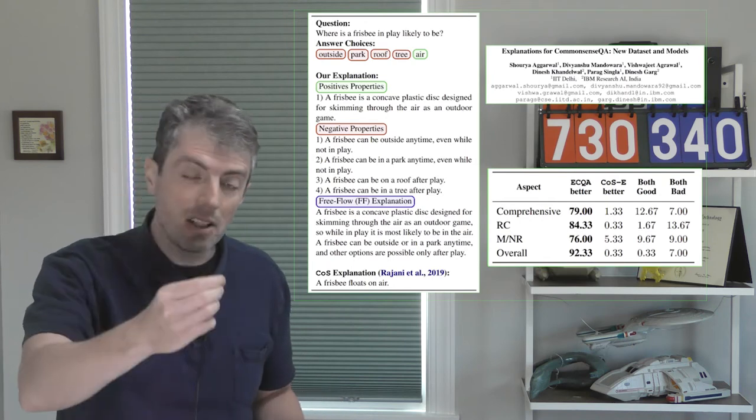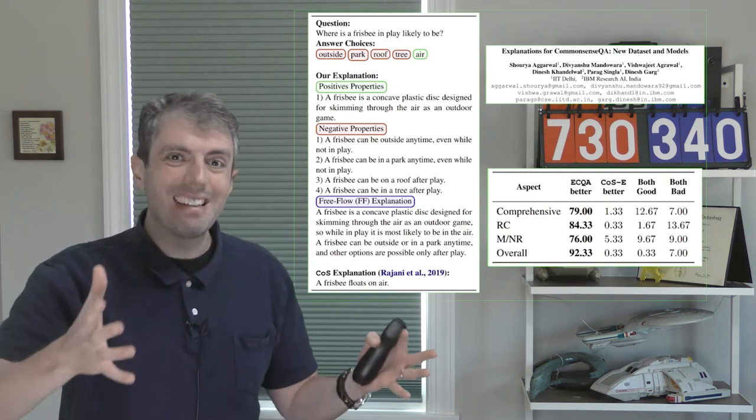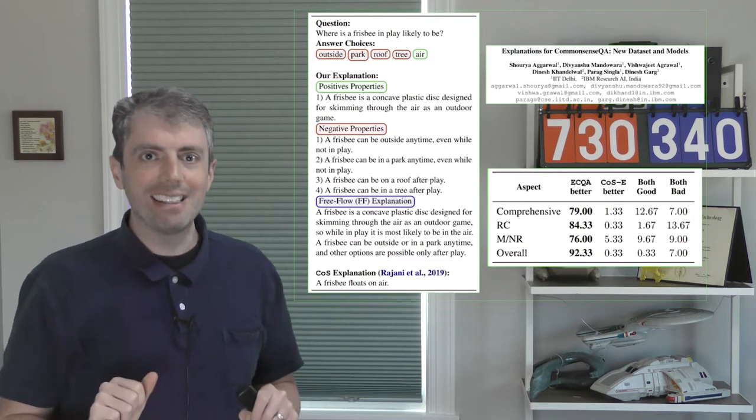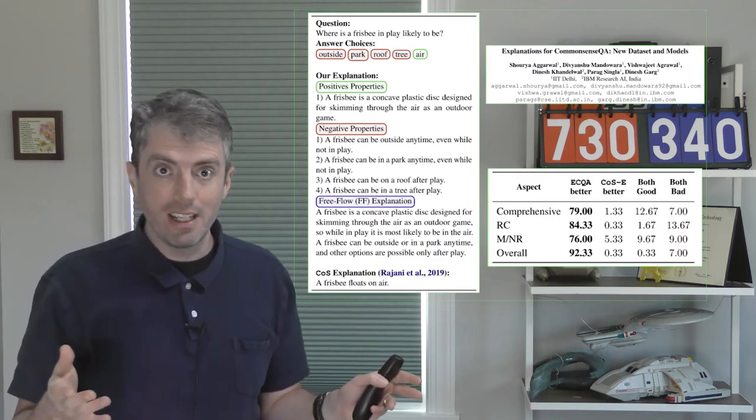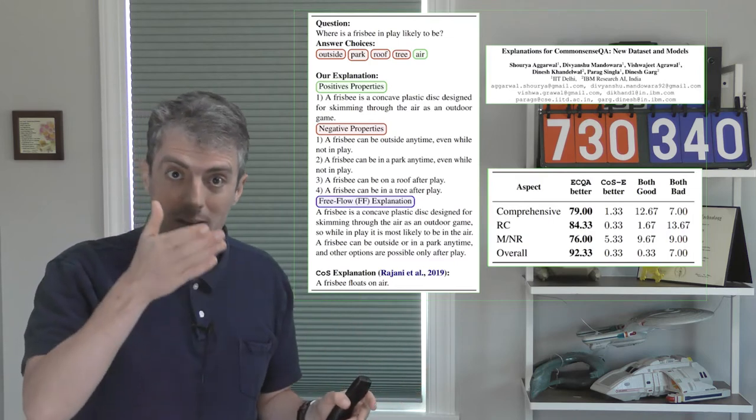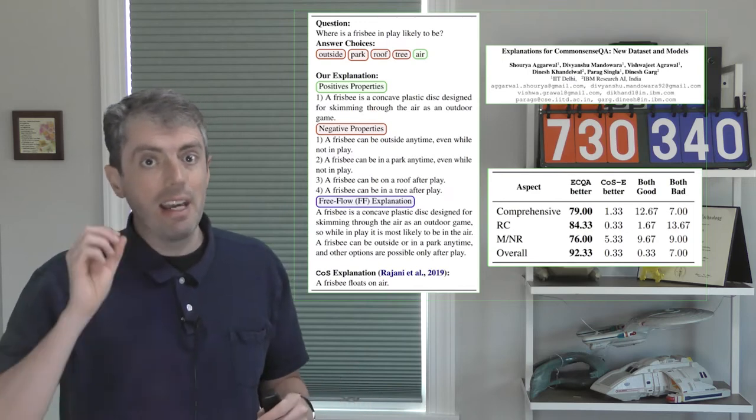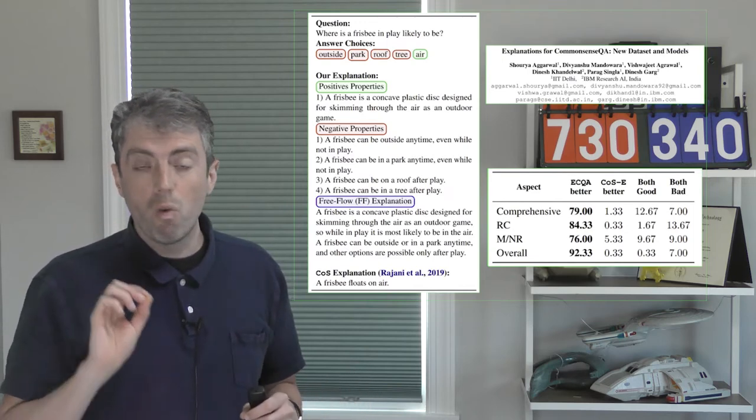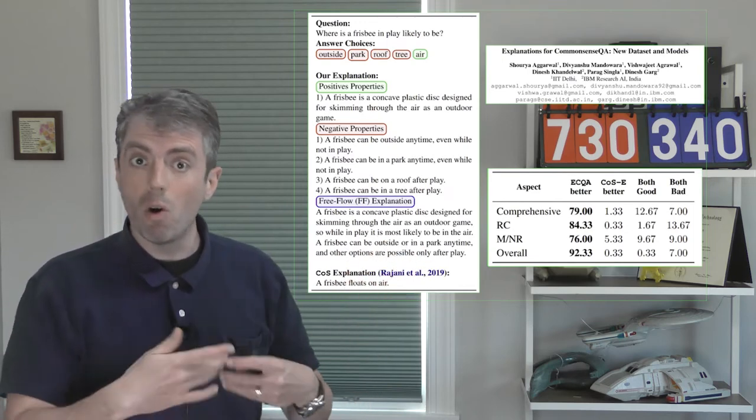Rather than just explaining a single option, it explicitly contrasts the selected answer to the alternatives. The human evaluation shows that explicitly contrasting answers is a much better explanation for why you should take one answer over the others.